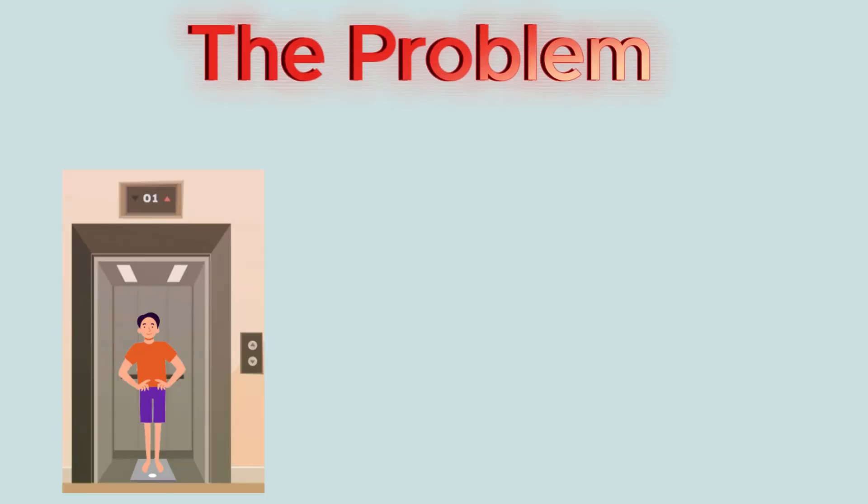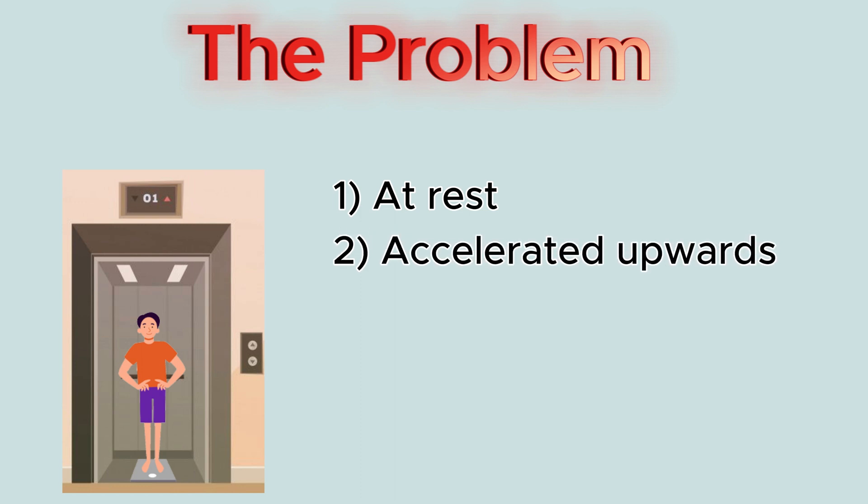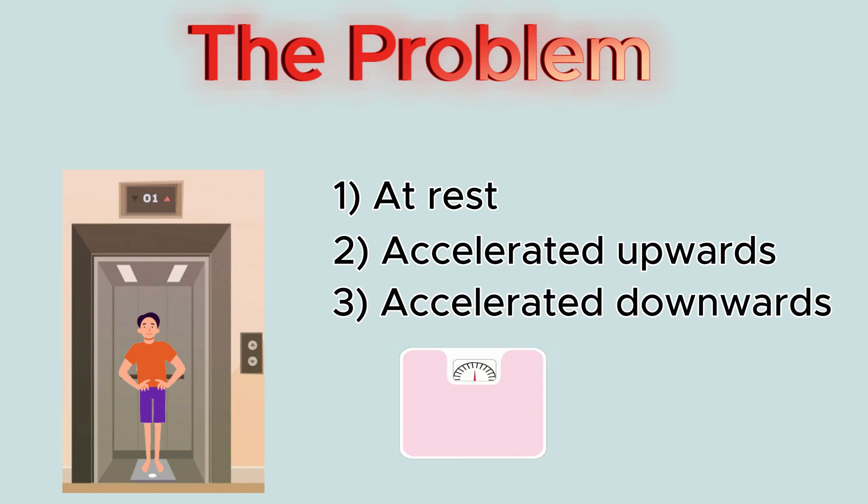Now let me define the problem. A man in an elevator weighs himself in three situations: first, when the elevator is at rest; second, when the elevator moves upward; and third, when the elevator moves downward. Every time, the man gets different readings of his weight. We have to explain why it happens.